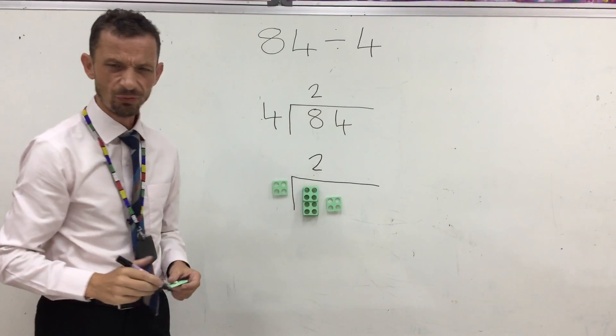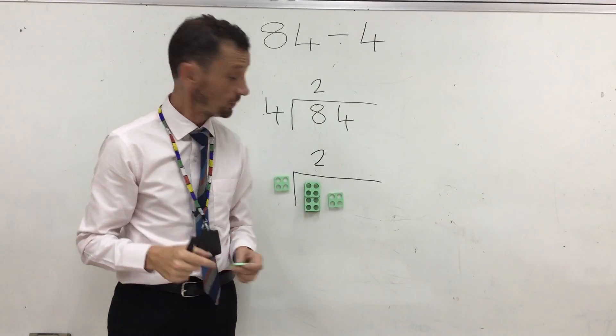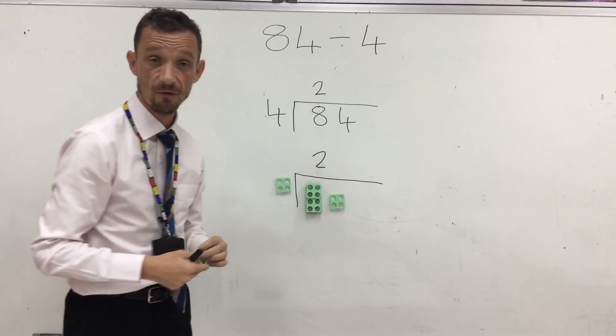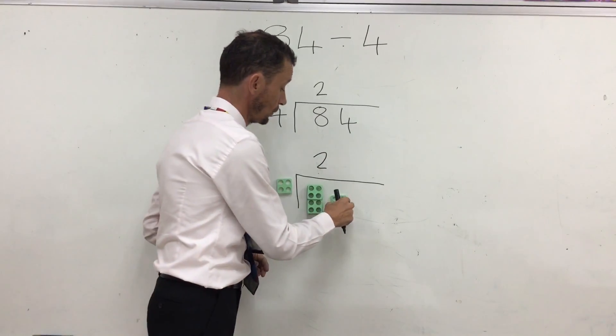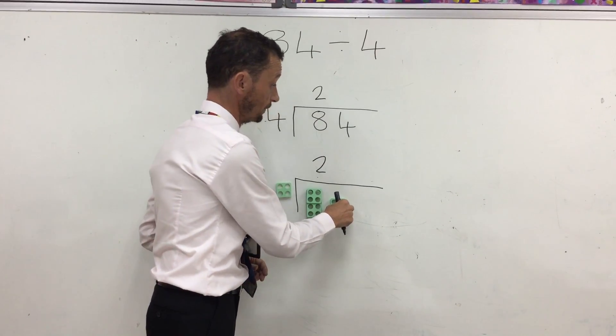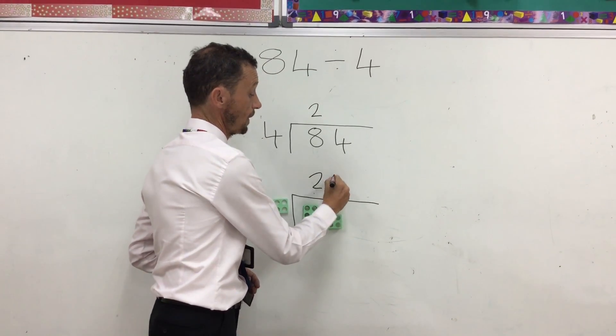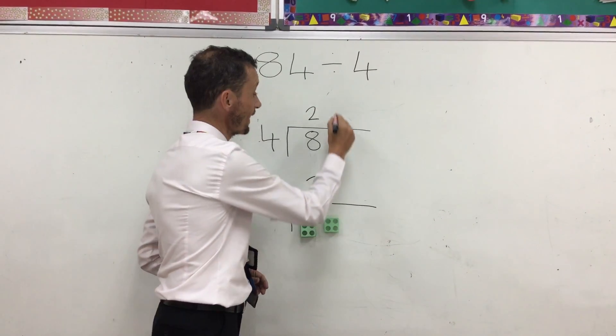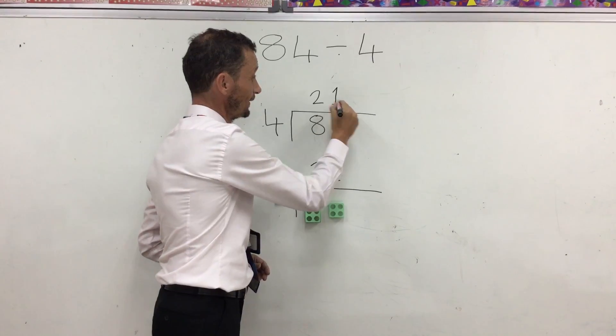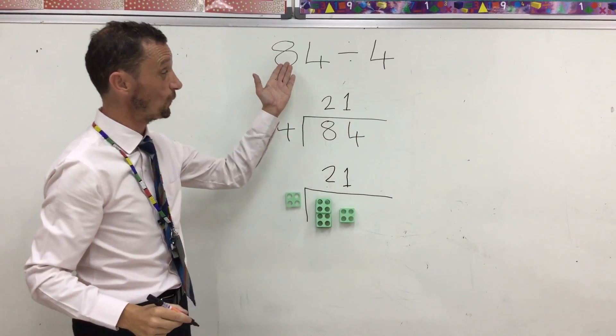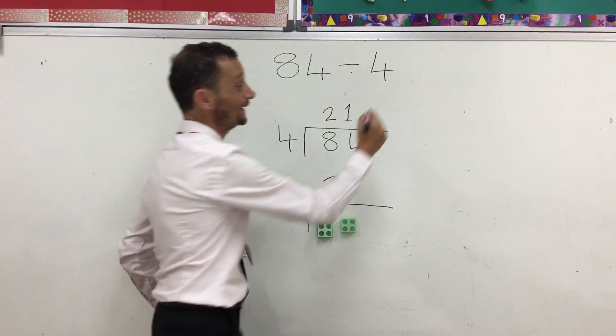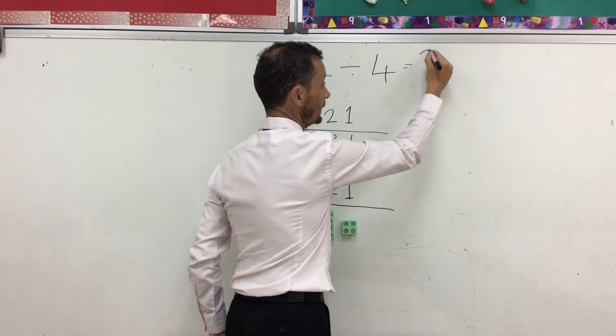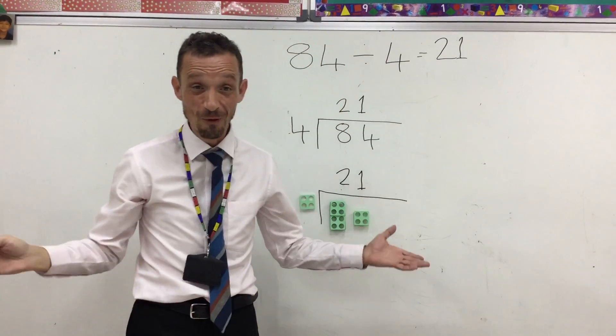Now, let's see how many 4s go into the second number, the 4. One. So I put a 1 there. We now know that 84 divided by 4 equals 21.